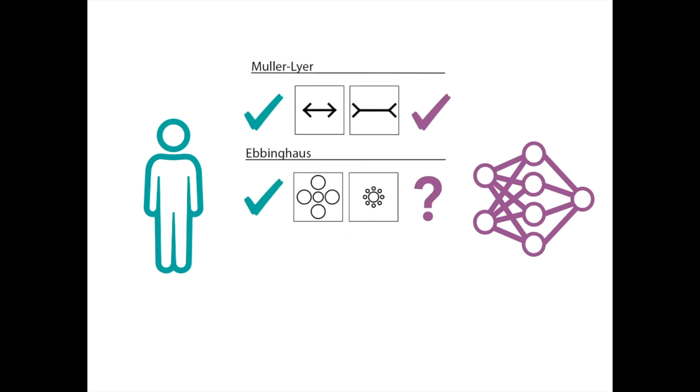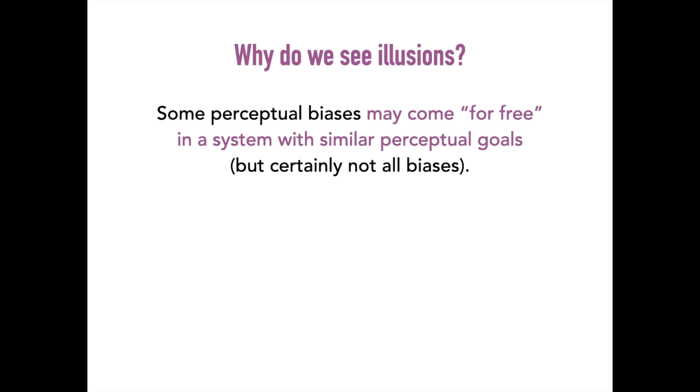So when comparing humans and deep neural networks, they both exhibit Mueller-Lyer illusion. There might be some similarity in exhibiting the Ebbinghaus illusion, but there's big differences for other illusions such as the Ponzo illusion. So to answer the question, why do we see illusions? It seems like some perceptual biases may come for free in a system with similar perceptual goals, but certainly not all biases.